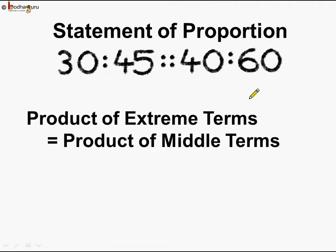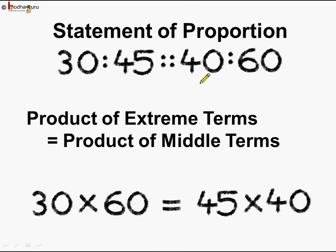So we see that the product of extreme terms is equal to the product of middle terms when the four terms are expressed in a statement of proportion. So what did we learn? In a statement of proportion like 30 is to 45 is as 40 is to 60, the product of extreme terms is always equal to the product of middle terms or the means. So 30 into 60 equals 45 into 40.